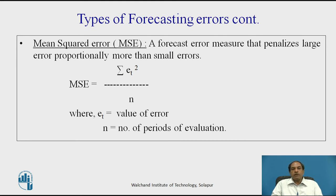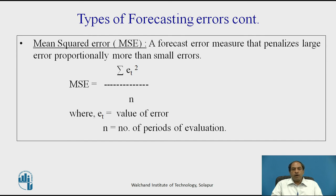A third type of error is Mean Square Error (MSE). MSE is a forecast error measure that penalizes large errors proportionately more than small errors. Large errors carry more penalty compared to smaller errors. It is a good indicator for taking corrective action on the forecasting method. MSE = Σet² / n, where et is the value of the error — we take the square of the error value and divide by n, the number of periods.